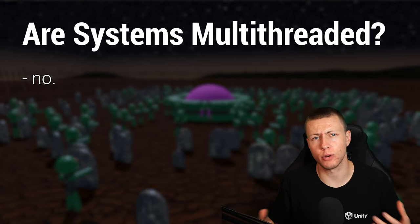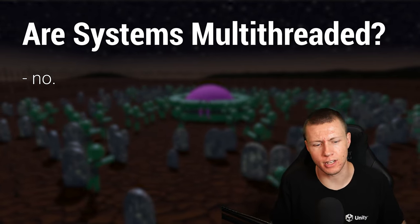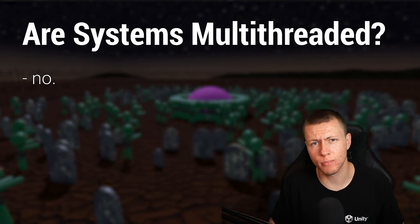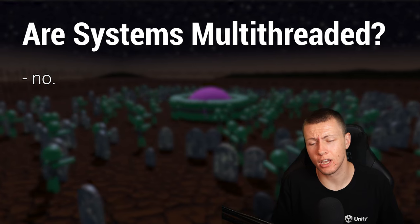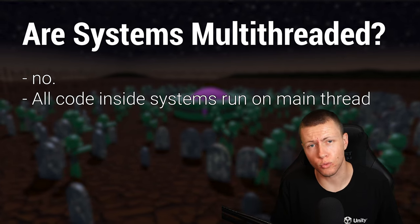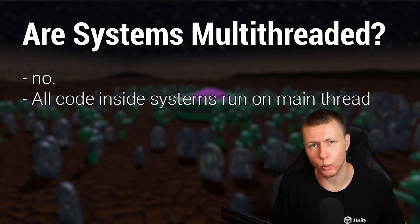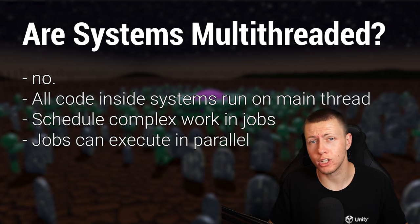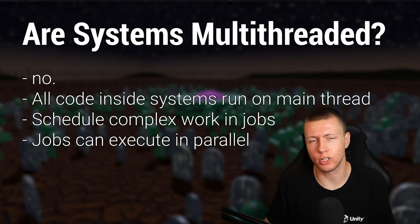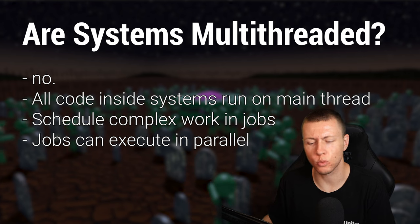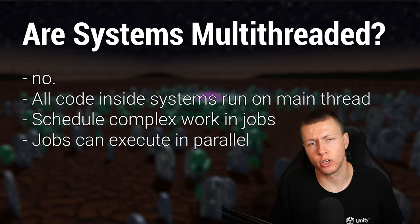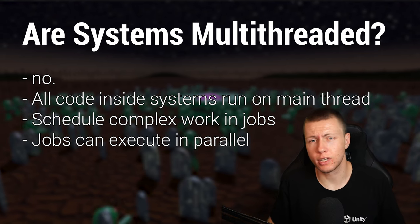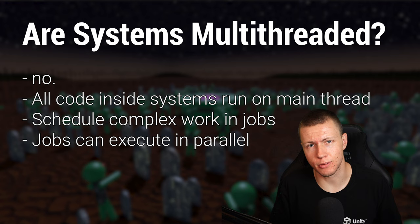You may be wondering whether systems themselves are multi-threaded. Systems only run on the main thread — any code written in systems always runs on the main thread. However, we can use systems to schedule jobs, and those jobs can run on worker threads. That's where we actually get the advantage of multi-threading. So in general, we want to keep code inside systems relatively simple and schedule complex work into the job system.